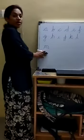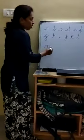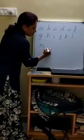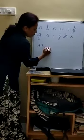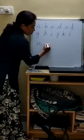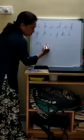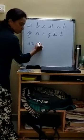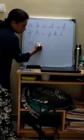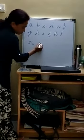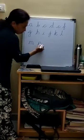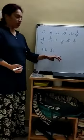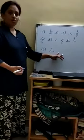Next is N. How to write? In the same between two lines, starting from the third line, go to the second line, come back to the third line, go back to the second line, take a U-turn, come back to the third line, leave with a tail. N. Nut. N. Nest.